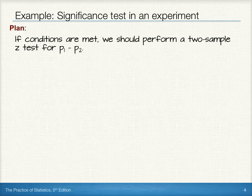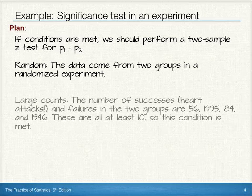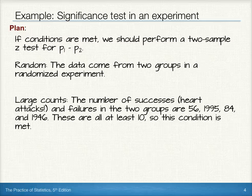Now, if the conditions are met, we'll perform a two-sample z-test for P1 minus P2. We were told the data come from two groups in a randomized experiment, so the random condition is met. The number of successes — in this case, a success is defined as individuals having a heart attack — and the number of failures in the two groups are all greater than 10. So the large counts condition is met.